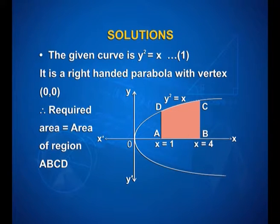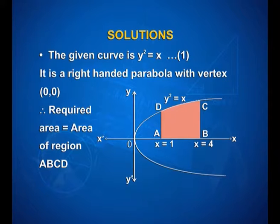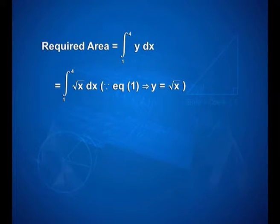The required area is equal to the area of the region A, B, C, D. Here you can see it is a right-handed parabola with the shaded region A, B, C, D, where x is equal to 1 at A and x is equal to 4 at B. Therefore, required area is equal to integral 1 to 4 of y dx, that is equal to integral 1 to 4 of square root of x dx.